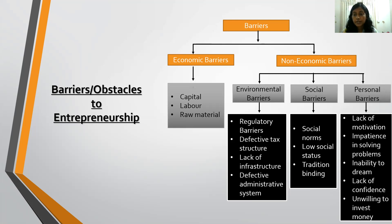The last category is personal barriers. The first personal barrier is lack of motivation. Entrepreneurs face a lot of challenges and initially face losses. When facing losses, you should not lose motivation and back out from your ideas. We need a consistent and right level of motivation. The second personal barrier is impatience in solving problems — seeking quick solutions and immediate results, lacking patience, which is also a barrier to entrepreneurship.